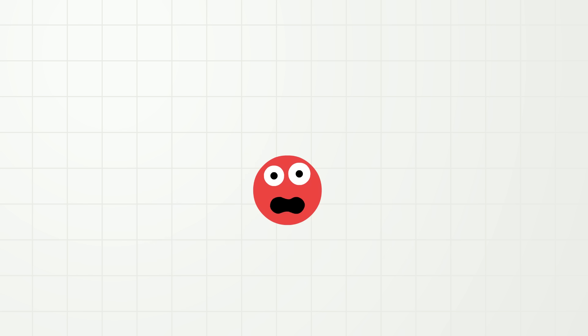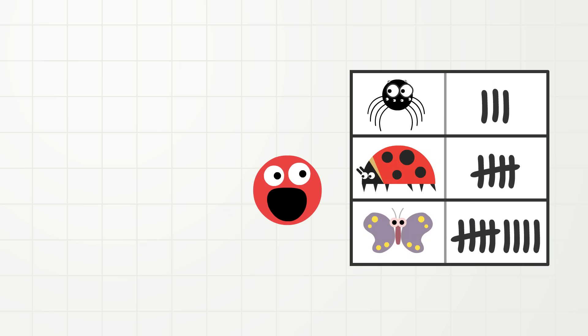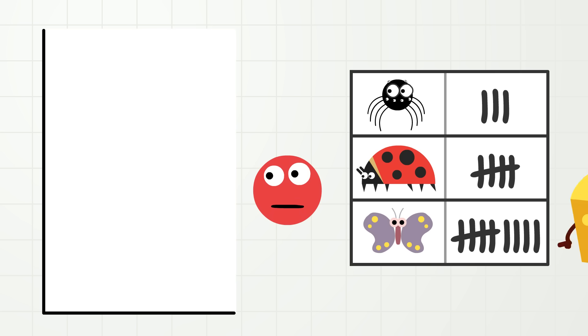Now, let us show this data in a different way. Instead of using tally marks, we will take the numbers and put them into something we call a pictograph. A pictograph is a way to show data with pictures.